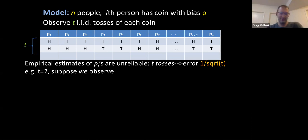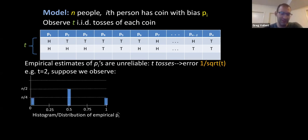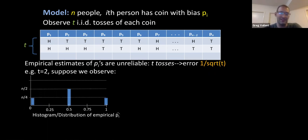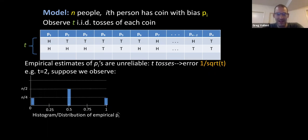Suppose t equals two, so we flip each coin exactly twice. Suppose this is the histogram of the empirical probabilities of flipping heads: roughly a quarter of the people flip two tails, roughly half the people flip either heads-tails or tails-heads, and the other quarter flip two heads. Based on this, what can we conclude about the true distribution of the p_i's?